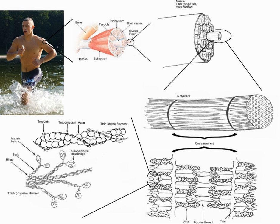Cardiac and smooth muscles contract without conscious thought and are termed involuntary, whereas the skeletal muscles contract upon command. Skeletal muscles in turn can be divided into fast and slow twitch fibers. Muscles are predominantly powered by the oxidation of fats and carbohydrates, but anaerobic chemical reactions are also used, particularly by fast twitch fibers.